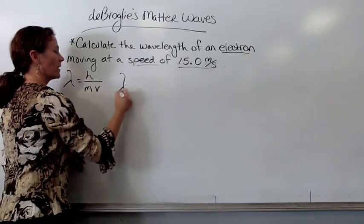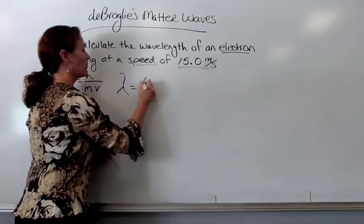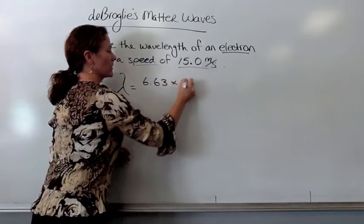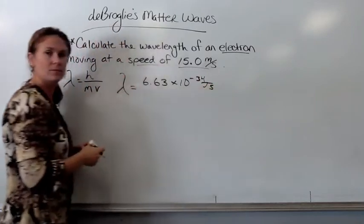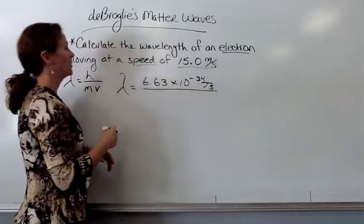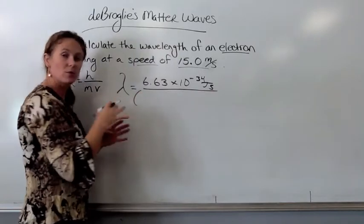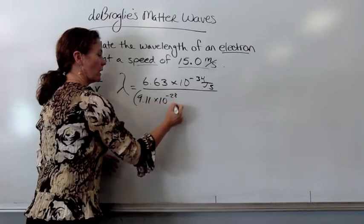So, the wavelength that an electron is actually traveling at is Planck's constant, which we do know is 6.63 times 10 to the negative 34 joule seconds. We have to divide that value by the mass of an electron, which, according to your reference page, 9.11 times 10 to the negative 28th grams.